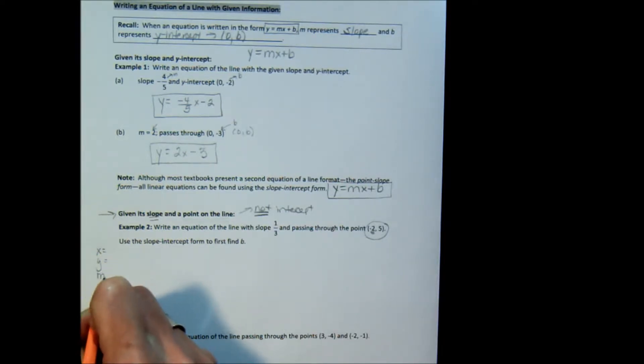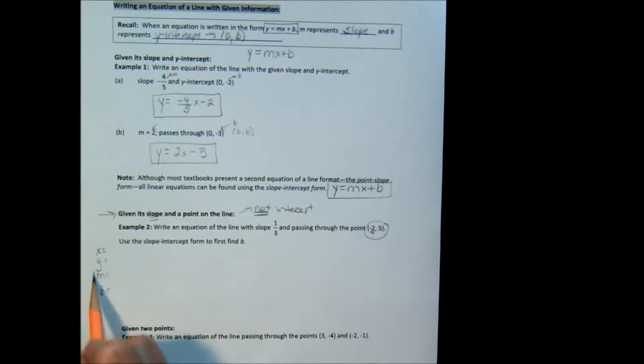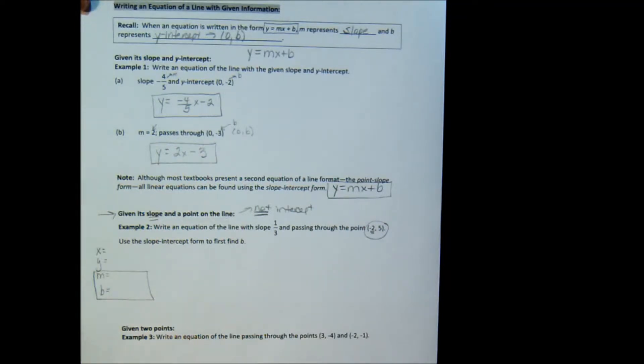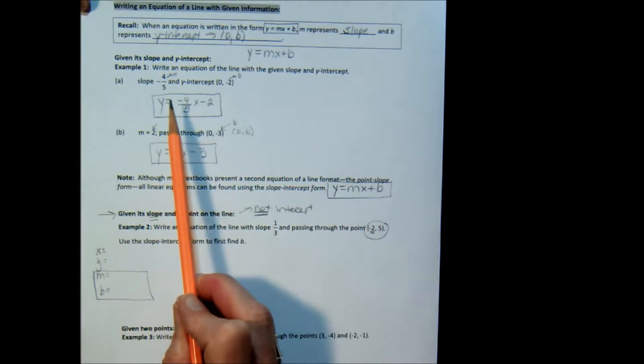Go to the margin, and we're going to write x equals, y equals, m equals, and b equals. And the two things that you have to have are the m and the b. Once you have those two things, then you can just fit them into the equation like we did in example 1a and b.